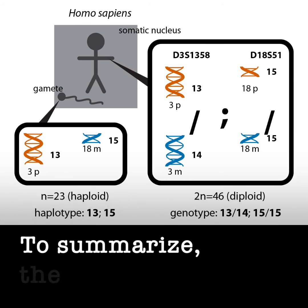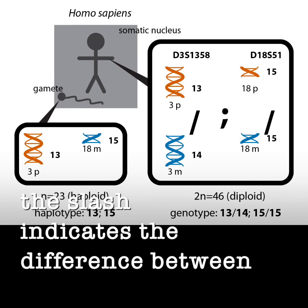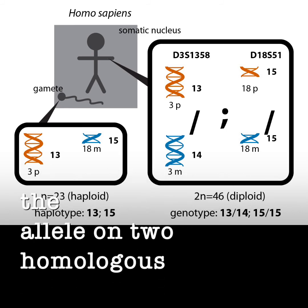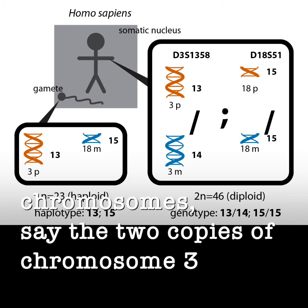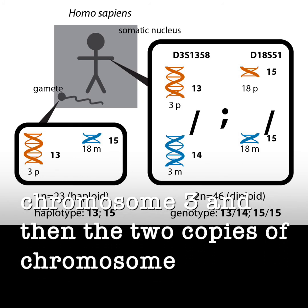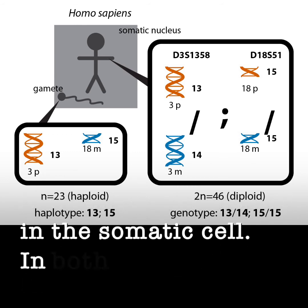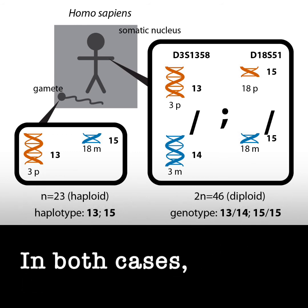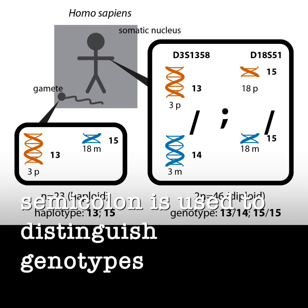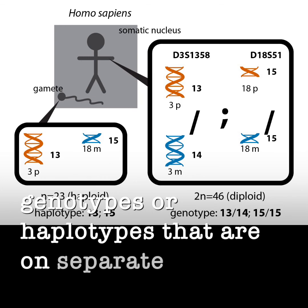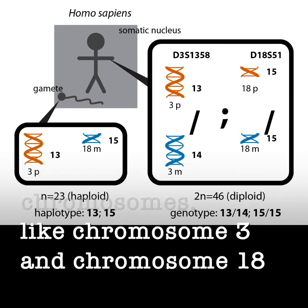To summarize, the slash indicates the difference between the allele on two homologous chromosomes — say the two copies of chromosome 3 and then the two copies of chromosome 18 — in the somatic cell. In both cases, the semicolon is used to distinguish genotypes or haplotypes that are on separate chromosomes, like chromosome 3 and chromosome 18.